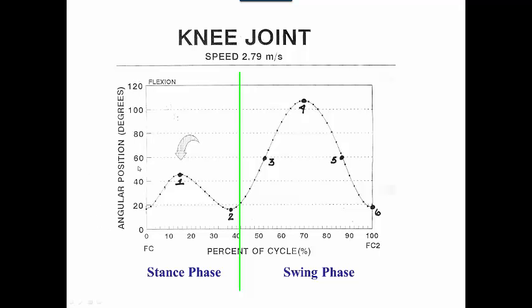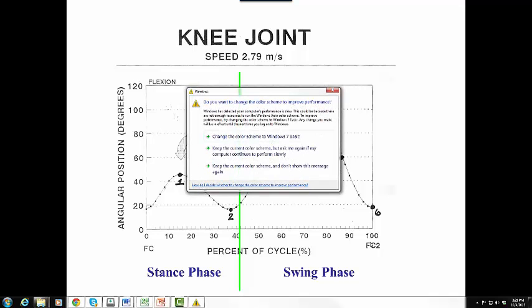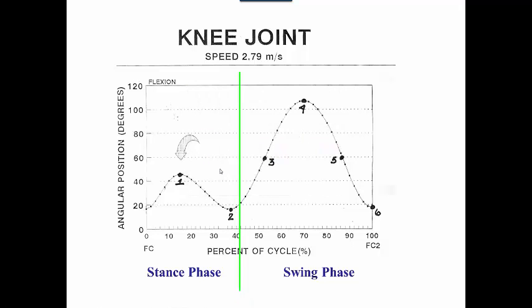You have position in degrees along the y-axis and percent of cycle along the x-axis. Now it's interesting why we do the percent of cycle, and that's because people run at different speeds, and if you, what they call rubber band it to 100%, from foot contact to the subsequent foot contact for a stride, then you can compare between people that are running faster or slower.